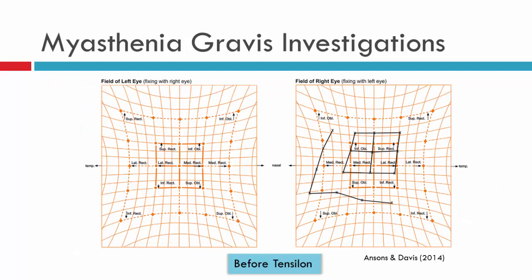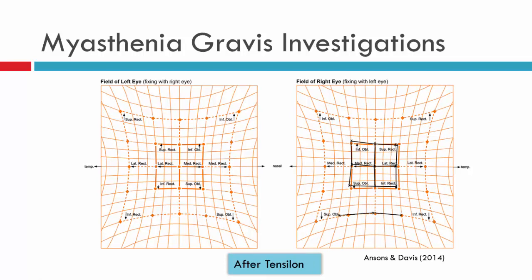Here we have an example of a patient who had a HES chart performed prior to Tensilon. We can see on the outer field there appears to be a superior oblique underaction, as well as on the inner field — so this patient may be concluded as having a superior oblique palsy. Post-Tensilon, there is significant improvement with very little superior oblique underaction. A true superior oblique palsy does not behave this way in response to Tensilon, so this is proof of a pseudo-superior oblique palsy caused by Myasthenia Gravis.